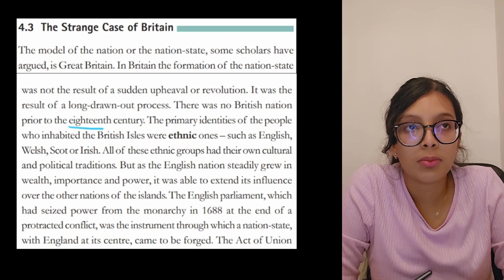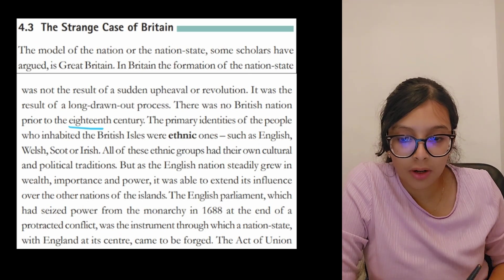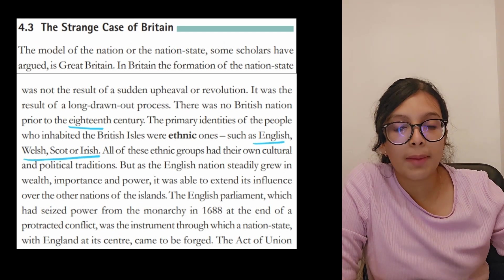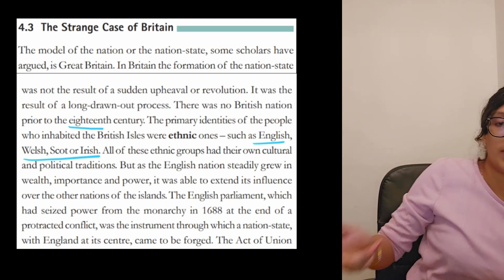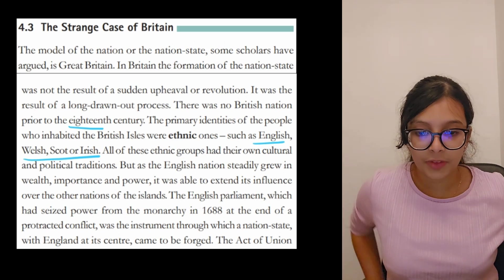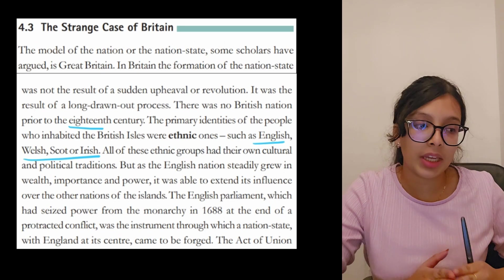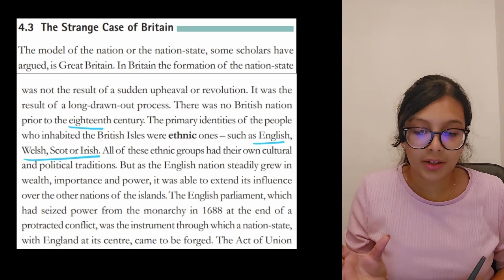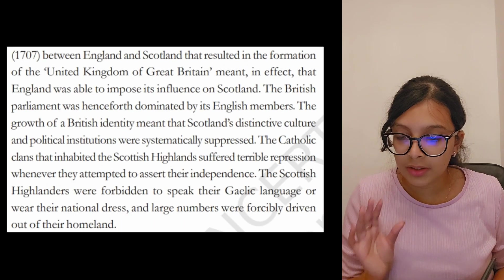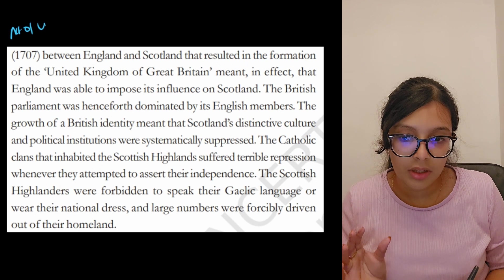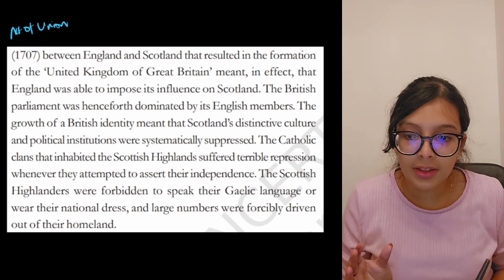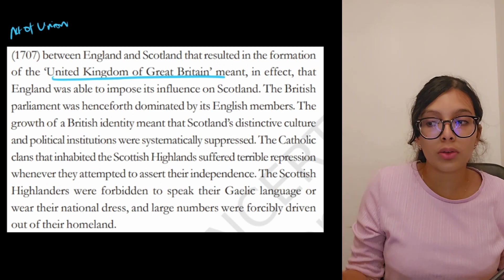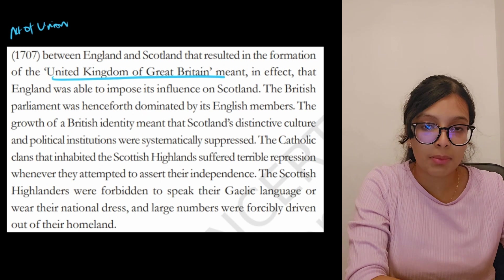As the English nation steadily grew in wealth, importance, and power, it was able to extend its influence over the other nations of the islands. The English Parliament, which had seized power from the monarchy in 1688, was the instrument through which a nation state with England at its center was formed. The Act of Union of 1707 between England and Scotland resulted in the formation of the United Kingdom of Great Britain, meaning England was able to enforce and extend its influence over Scotland.